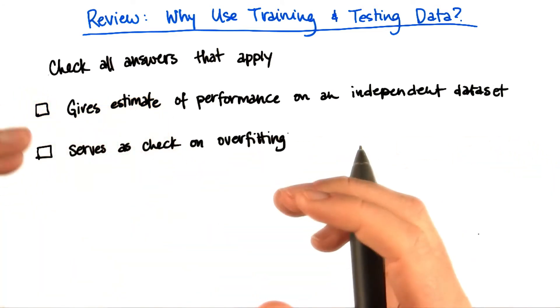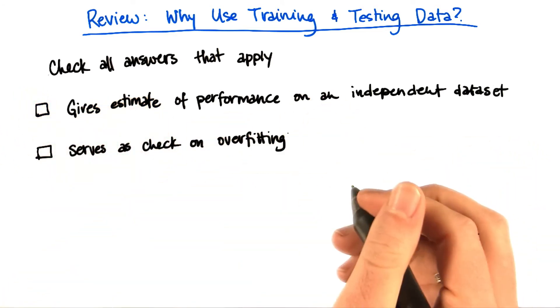The second option is that having separate training and testing data serves as a check on overfitting.